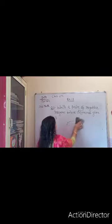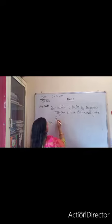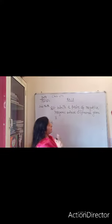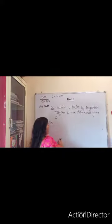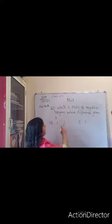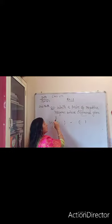Let's move forward with question number two. The question is: write a pair of negative integers whose difference gives 8. 8 is a positive integer, but you have to choose two negative integers. Pair means two. Here should be a minus sign. The question says 'write a pair of negative integers whose difference' — it means here should be a negative sign also, but the answer is positive.